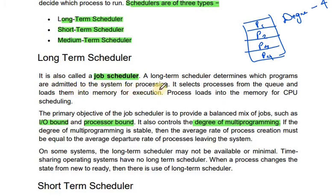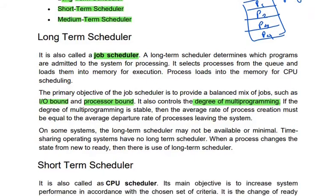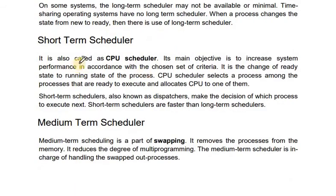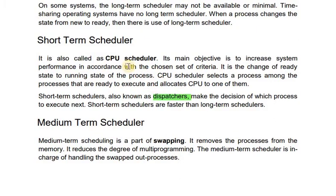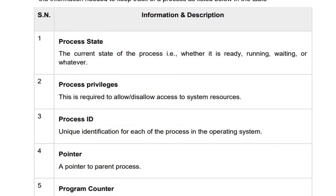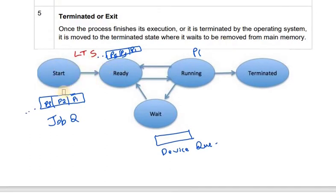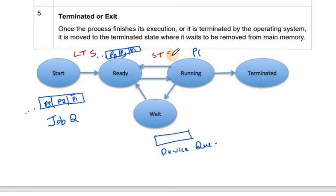The short-term scheduler, also known as the dispatcher or CPU scheduler, has the main objective of increasing system performance in accordance with the chosen set of criteria. It handles the ready-to-running state transition. The long-term scheduler handles the start-to-ready state, and the short-term scheduler handles the ready queue to CPU transition.